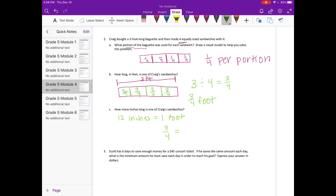So I'm using 12 as the denominator because I want out of 12 inches. Four times three gets me 12, so I need to multiply three times three and get nine twelfths. So I would have nine inches per sandwich.